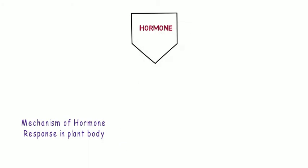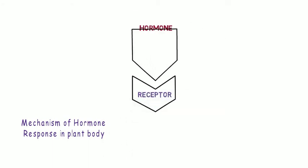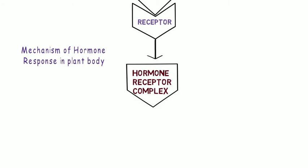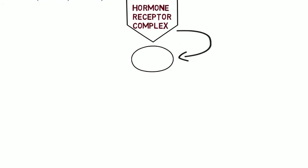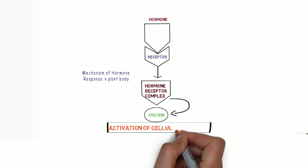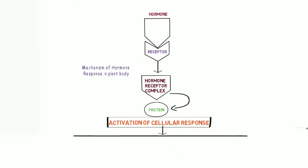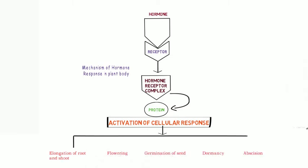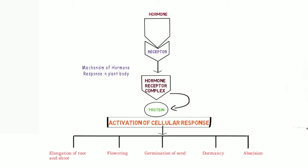Now let us have a basic idea on how the entire mechanism of hormone-stimulated response occurs. In reality, hormones bind with the receptor present on the cell membrane to form a hormone-receptor complex. This complex activates a signal cascade for genes for production of desired proteins. This in turn gives cellular responses like elongation of shoot and root, flowering, germination, leaf senescence, etc.